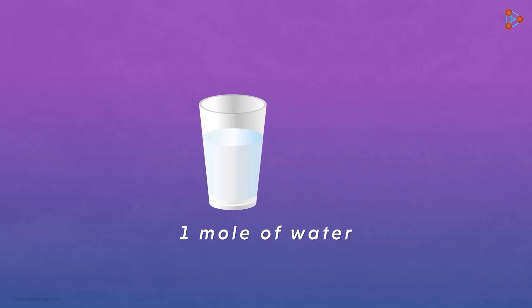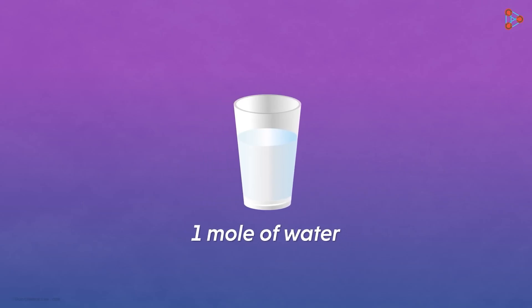For a given molecule, one mole is a mass in grams whose number is equal to the molar mass of the molecule. For better understanding, let us take an example of a water molecule. It has a molar mass of 18, which means one mole of water weighs 18 grams. If we find the mass of one mole of water, we get the answer as 18.015 grams of water.